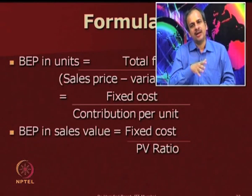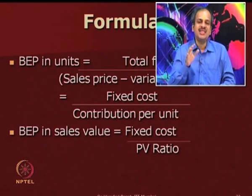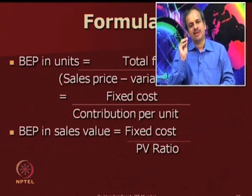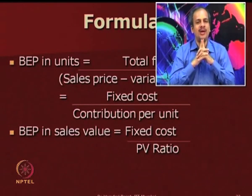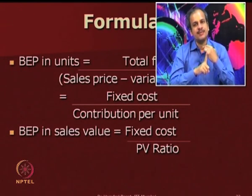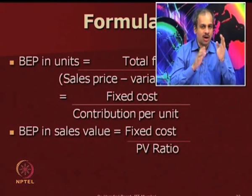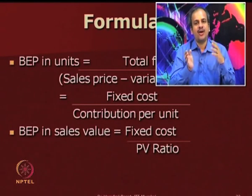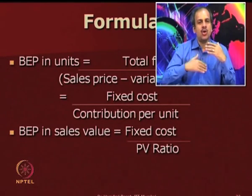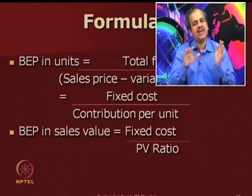You can see the formulas for BEP: for calculating in units, it is fixed cost divided by contribution per unit; and for calculating in terms of value, it is fixed cost divided by PV ratio. This understanding of contribution, PV ratio, and BEP helps us in a variety of decision situations — pricing decisions, deciding the level of activity when a product or raw material is in short supply, sales mix decisions, and outsourcing decisions.